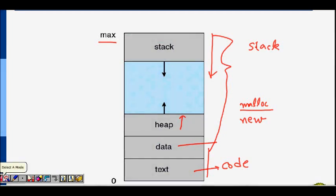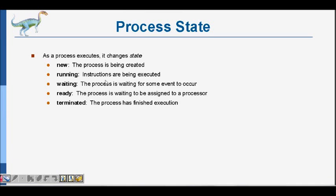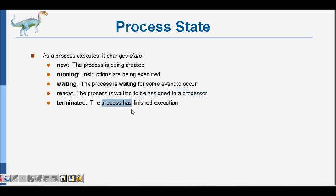Now let's look at process states. A process goes through various states. First is new — a process is being created. Running — instructions are being executed for that process. Waiting — the process is waiting for some event to occur so that it can run again. Ready — the process is waiting to be assigned to a processor; it has code to execute and will run once assigned. Terminated — the process has finished.